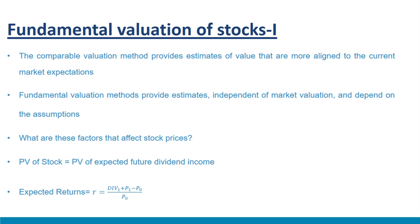Let us understand this through a simple example. When you plan to buy a stock, you expect returns or payoffs in two forms: first, you expect to receive dividends; second, you expect capital gains — or sometimes losses — when you sell the shares. Let us say you bought this stock at price P₀ and plan to sell it next year. By the end of the year, the price is expected to be P₁ and the firm has announced a dividend of Div₁. Expected returns R equal to (Div₁ + P₁ − P₀) / P₀. Notice that these are expected returns predicted by you, not actual returns, since P₁ is the expected sale price, which may not be the actual price.